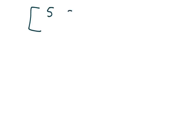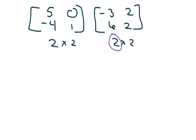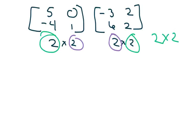Let's try one more. We have a 2×2 matrix [5, 0; negative 4, 1] multiplied by a 2×2 matrix [negative 3, 2; 6, 2]. Since both inner dimensions are 2, this is defined. The result will also be a 2×2 matrix.